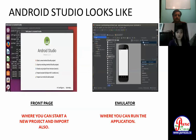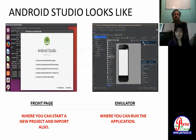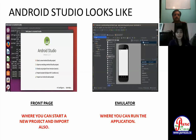This is how Android Studio looks. The front page is where you can start a new project and import projects. You can see the mobile on the screen — this is the simulator. You can run applications in two ways: on your phone via USB debugging, or on the emulator.